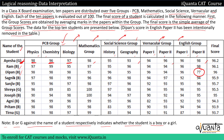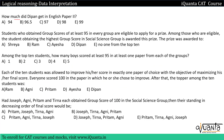I hope the process is clear. The first question is how much did Dipan get in English paper 2 — we can find this out using his group score and final score. The next question is about students who obtained group scores of at least 95 in every group being eligible for a prize. The very first step is to find the missing score of Dipan in English paper 2.